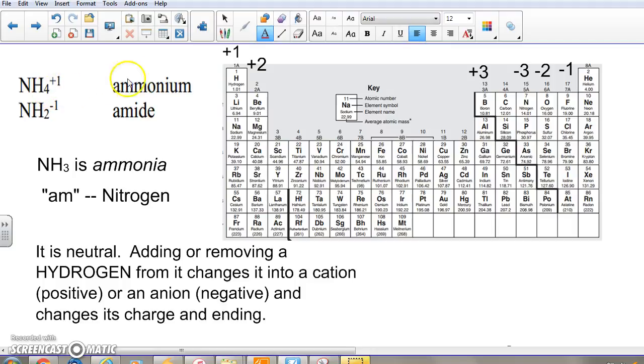NH4 plus 1. And we have a negative ion by removing an H, and then it gets the more common 'ide' ending for the negatives.